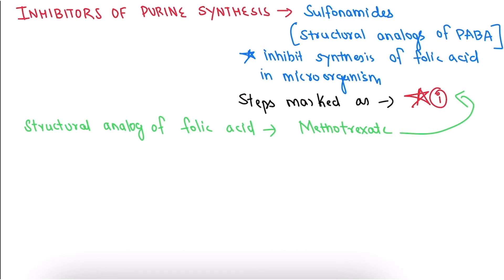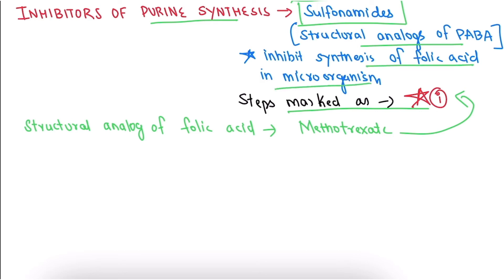Now coming to the inhibitors of purine synthesis. Sulfonamides are structural analogues of PABA (para-aminobenzoic acid), which inhibits the synthesis of folic acid in microorganisms. The steps marked with a star involve enzyme formyl transferase, and sulfonamides inhibit that enzyme. Similarly, methotrexate, a structural analogue of folic acid, also inhibits the steps involving formyl transferase.